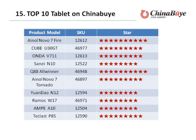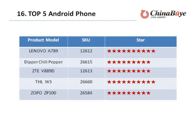Top 10 tablets on ChinaBuy include: IRO-0V75, QB U30JT, Under V711, Selling N10, Co-88, Android 07, Yandao N12, Zimers W17, Emya Level A789, ZTE V889D, THLW3, and Drop ZP100.